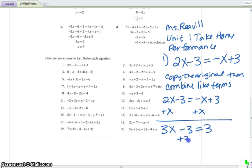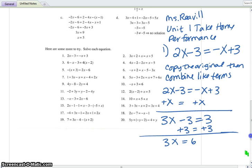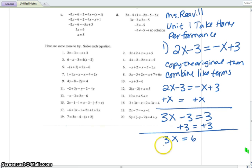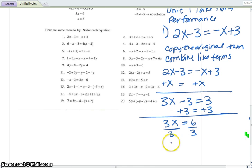I'm going to continue to combine like terms. And notice that I'm showing in each step the addition that I'm doing, followed by the result. 3x equals 6. I'm going to use the division property of equality to divide both sides by 3. And I will have a result, x equals 2.